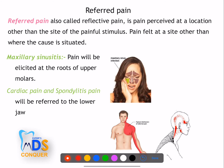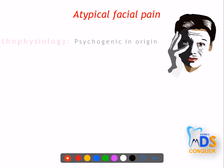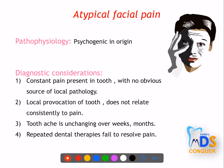Referred pain is perceived at a location other than the site of the pain stimulus. For example, maxillary sinusitis causes pain felt in the roots of the upper molars; cardiac pain is referred to the lower jaw. In contrast, radiating pain is present at the original site and also extends elsewhere — for example, tooth pain that radiates to the ear.